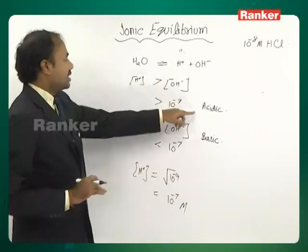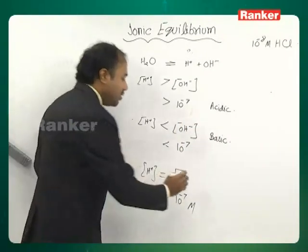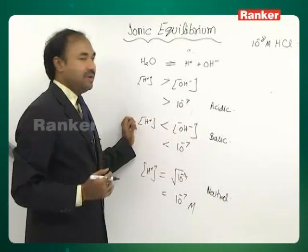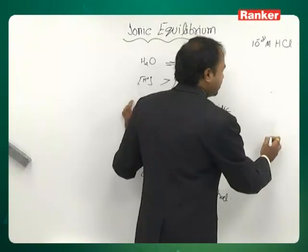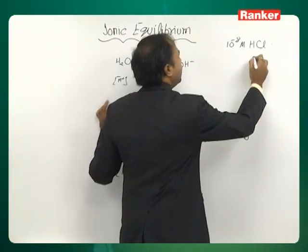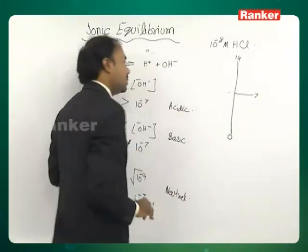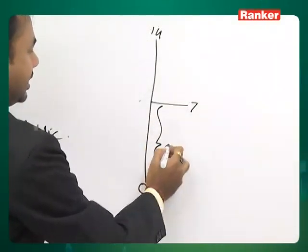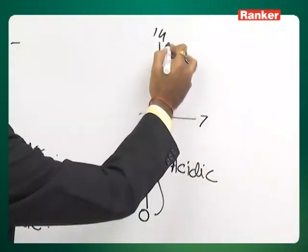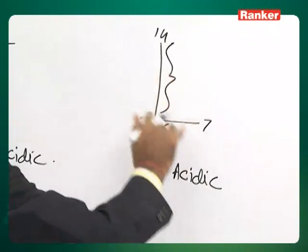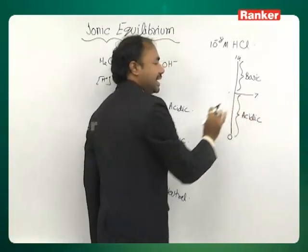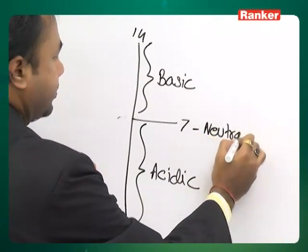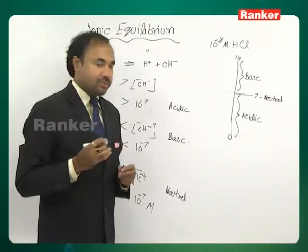Based on these conditions, at 25°C a pH scale is defined which starts from 0 and goes up to 14, with 7 in the middle. If the pH of a solution lies between 0 and 7, the solution is acidic. If it lies between 7 and 14, the solution is basic. If it is exactly 7, the solution is neutral.